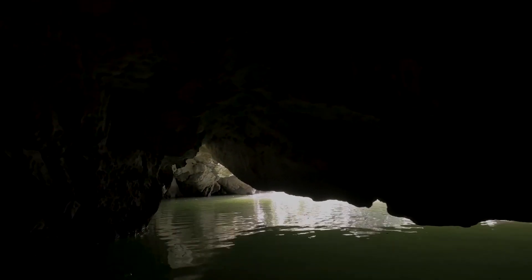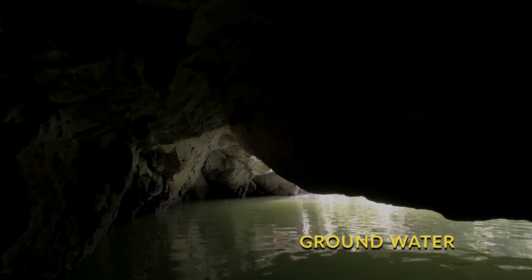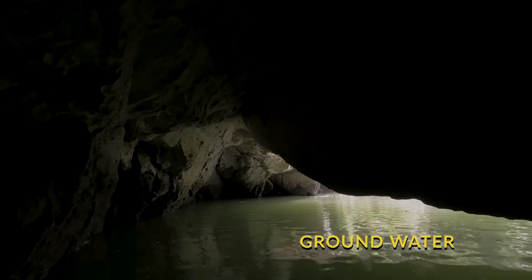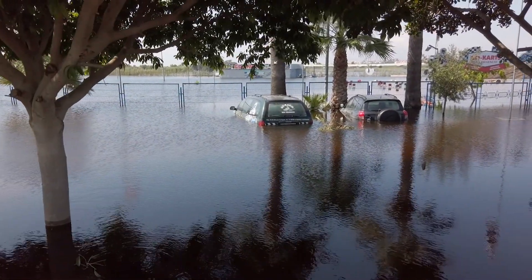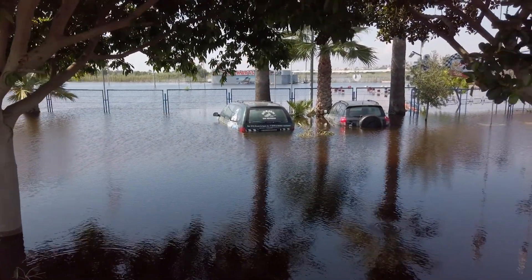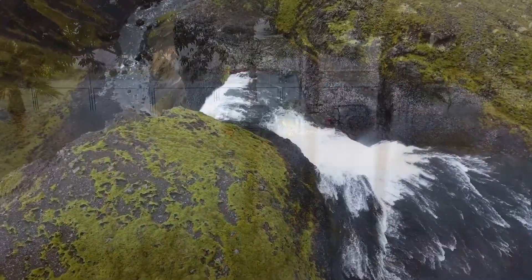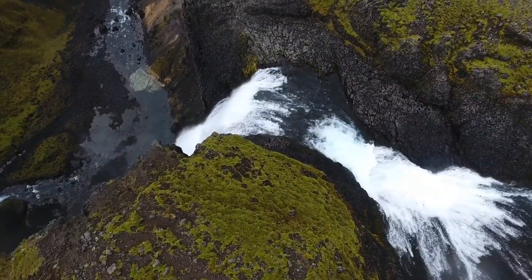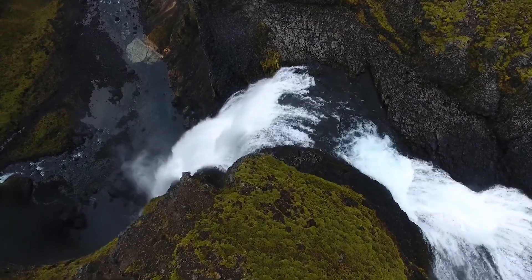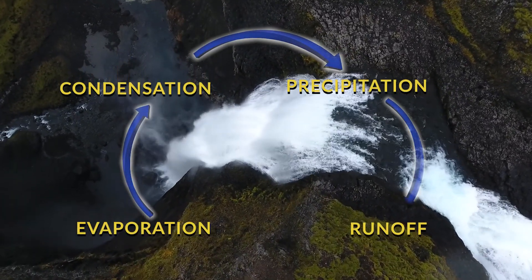Once the water infiltrates the ground, it will move down through the soil — this is called percolation. Eventually, the water will reach an underground river; this is called groundwater.